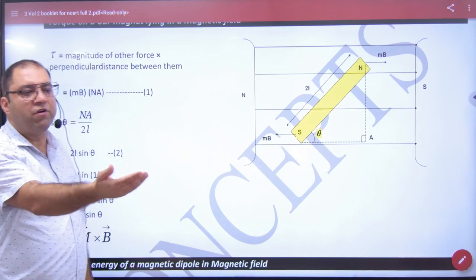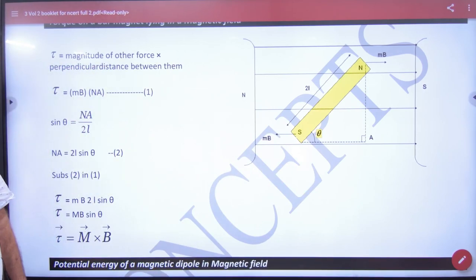So, if I tell you the amount of work done from theta1 to theta2 to rotate the magnet, that will give the energy stored value.